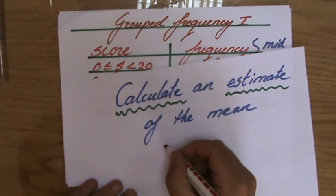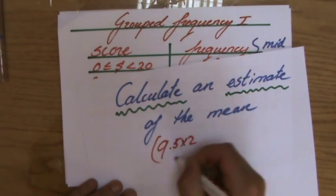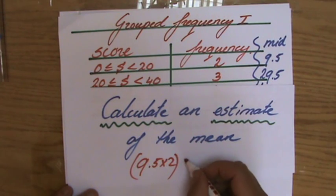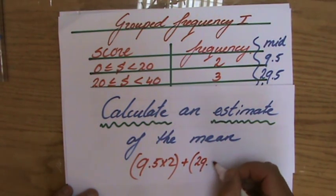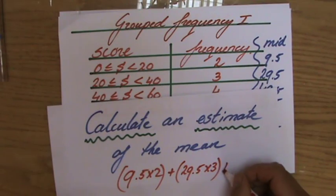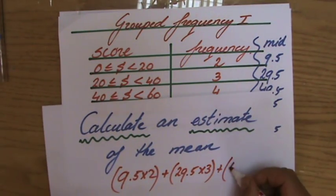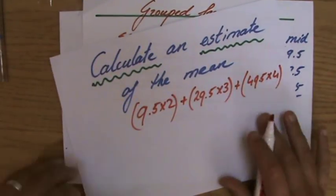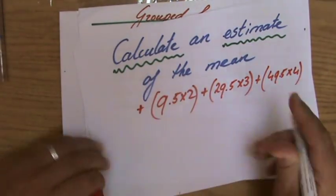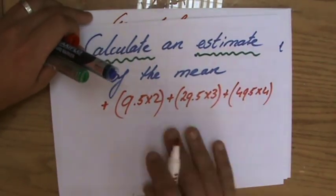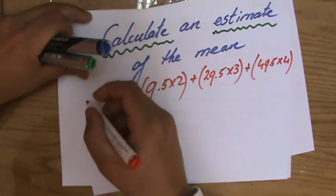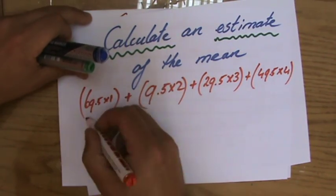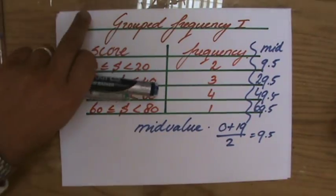I can say 9.5 times 2, or if you like, 9.5 plus 9.5, plus 29.5 times 3, plus 49.5 times 4. Of course it doesn't fit. I'm going to continue on this side then. Sorry about that, guys. I just write too big. 69.5 times 1. Okay. Divided by...